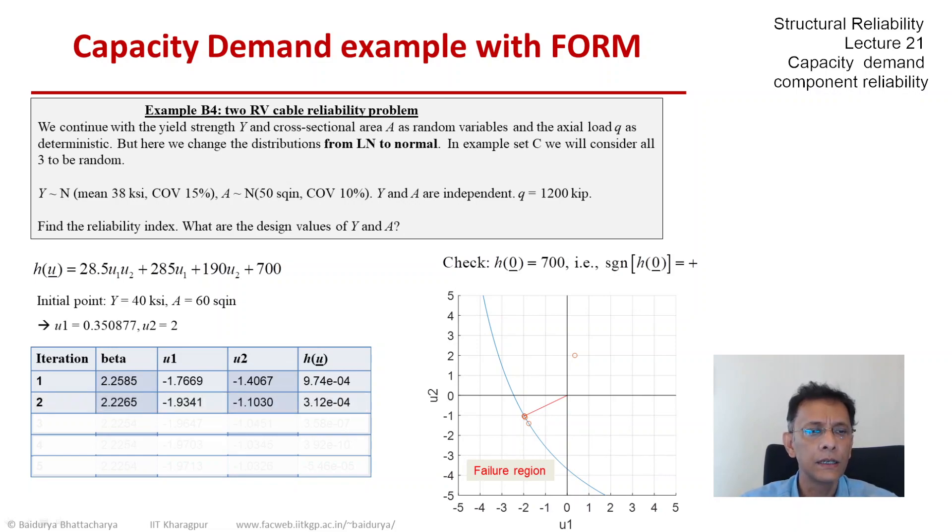Let's proceed. We move closer to the optimal point from minus 1.76, U1 moves to minus 1.93. So U1 moves a little bit further away. U2 moves from minus 1.4 to minus 1.1. The point is still very much on the limit state line, about 3 times 10 to the minus 4. And beta comes down to 2.23.